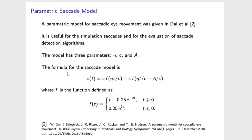Here we present a simple formula for a saccade with three parameters: eta, c, and a. Eta and c are the parameters of the main sequence, and a is the amplitude of the saccade. In our saccade model, s of t is the angle or position of the eye as a function of t, and f is defined as a function of time. This model was presented in a paper from 2016.